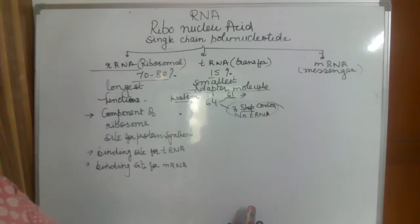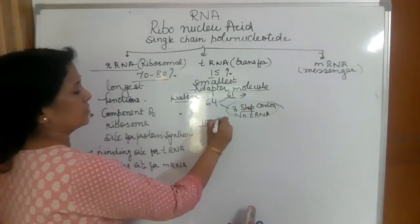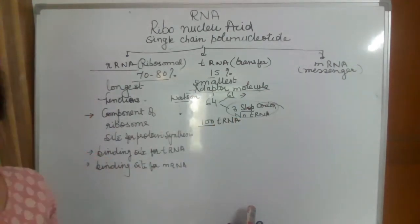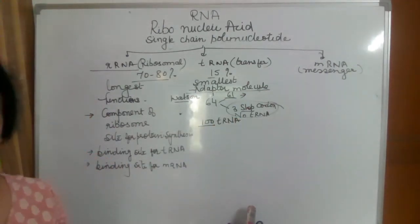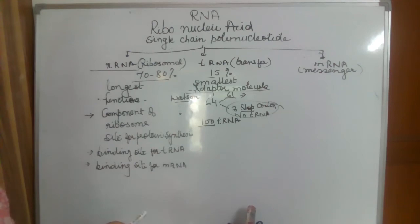We have around 100 types of tRNA in the cytoplasm. Why 100 types? Because for some amino acids there can be 2 to 6 different types of tRNA. That is why we have around 100 types of tRNA in the cytoplasm.